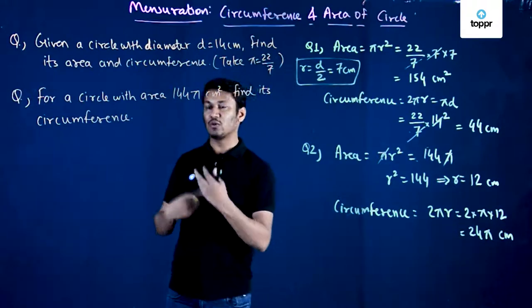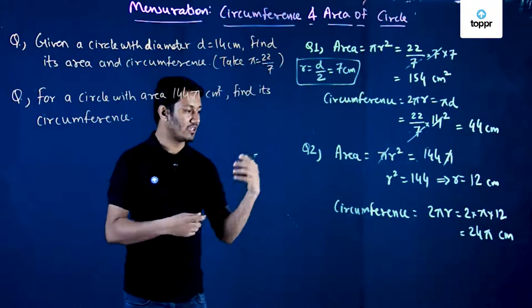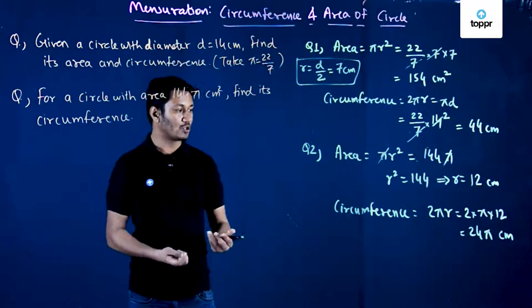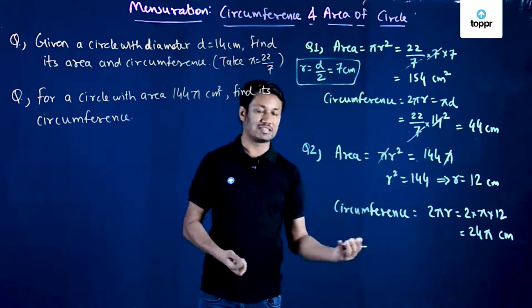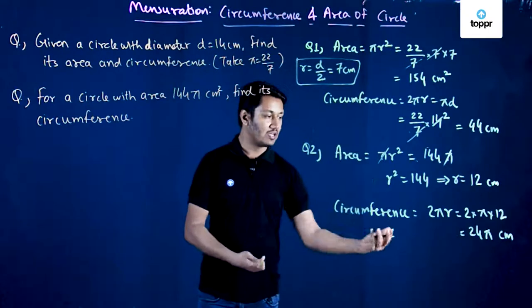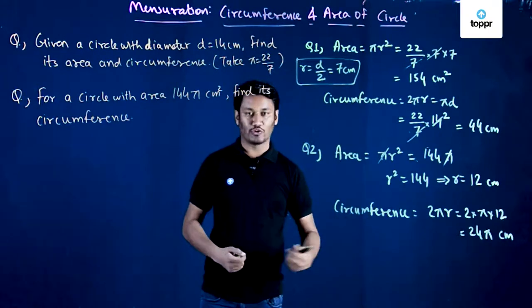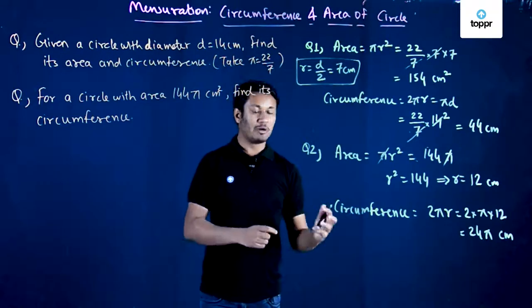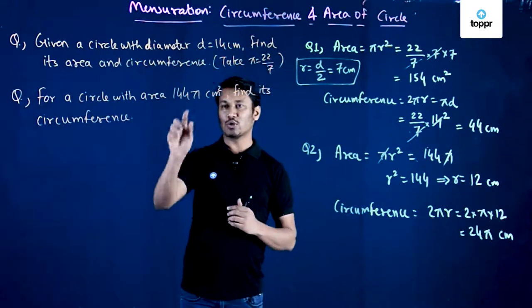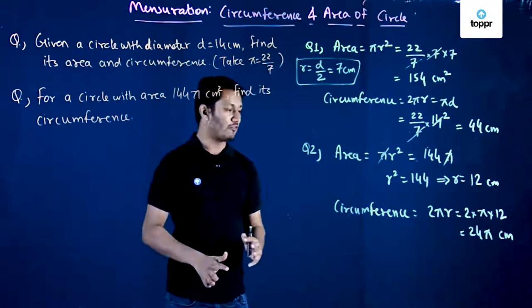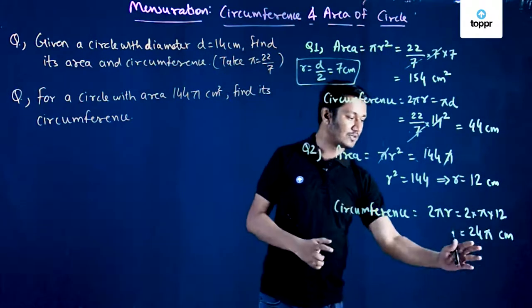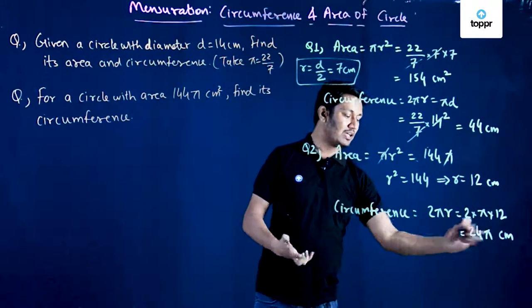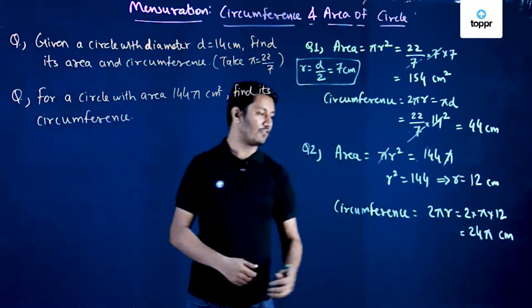I can keep the answer in the form of pi. If a specific value of pi were given, such as 22/7, we could substitute and find a numerical answer. But since the area was given in terms of pi, we keep the circumference in the form of pi as well — 24π cm.